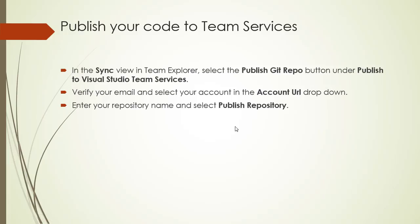When you are publishing your code to Team Services or Git services, there are a few steps involved. First, when you have created a project in disconnected architecture, you need to go to Team Explorer and select 'Publish Git repo' or publish the project. The second step is to verify your email account, give the repository name, and then publish your repository.